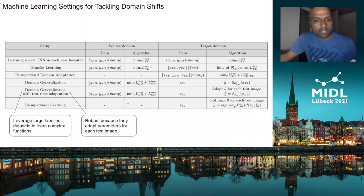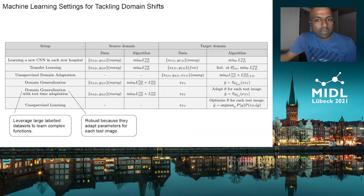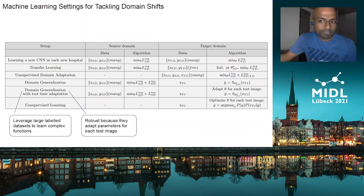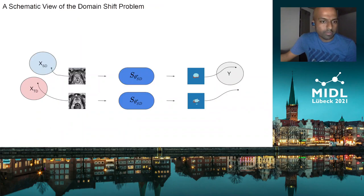We propose to do domain generalization — performing all the regularization tricks in the source domain — but then when we go to the test domain, we also leave room for some adaptability, doing this adaptation for each test image. So we have domain generalization combined with test-time adaptation.